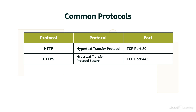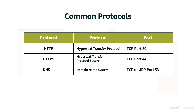When we're pointing our browser to a web server, we probably are not entering the IP address of that server. Instead, we'll probably use the name of that server, something like LinkedIn.com. But to send packets to LinkedIn.com, we need to know its IP address. To get that information, we can ask a DNS server, where DNS stands for Domain Name System. We communicate with that server using the DNS protocol, which can use either TCP or UDP port 53.